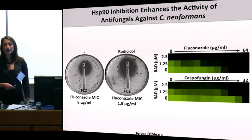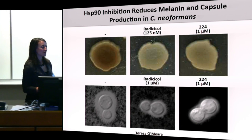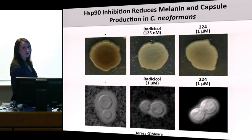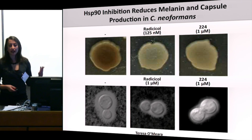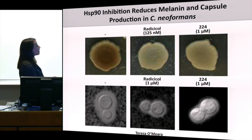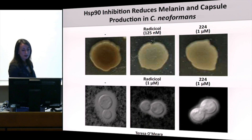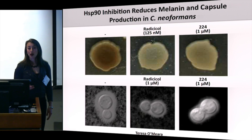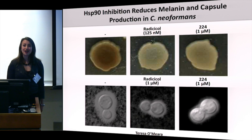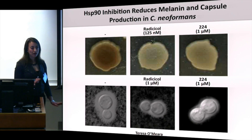As with C. albicans, inhibiting Hsp90 in Cryptococcus affects not only drug resistance but also virulence traits — melanin production and capsule production. When we inhibit Hsp90 with radicicol or compound 224 at sub-inhibitory concentrations, we reduce melanin production, so the colony is less brown on niger seed agar. The polysaccharide capsule in untreated strains is greatly diminished when we inhibit Hsp90 with either radicicol or 224. We think we can leverage structural differences to generate fungal-selective molecules, and with a clear path to diversity synthesis libraries, we can optimize potency, fungal selectivity, and pharmacokinetic properties.